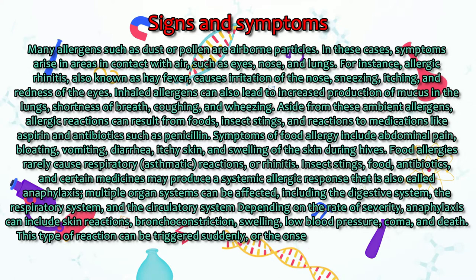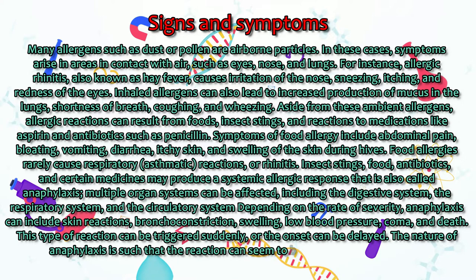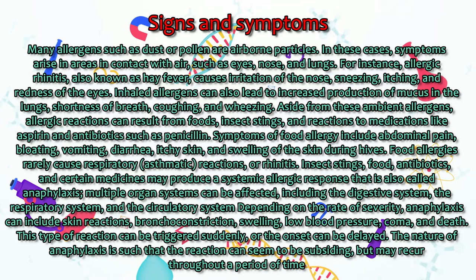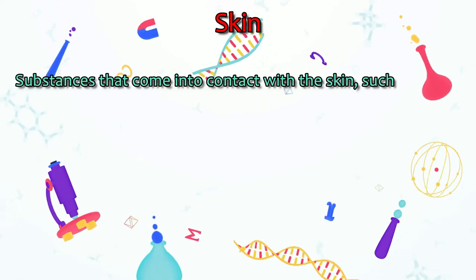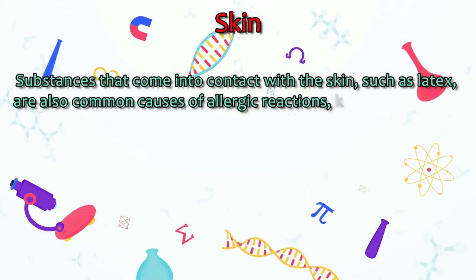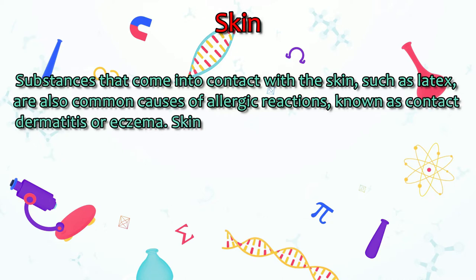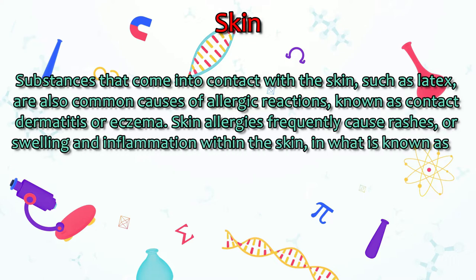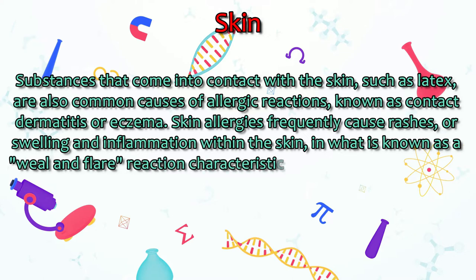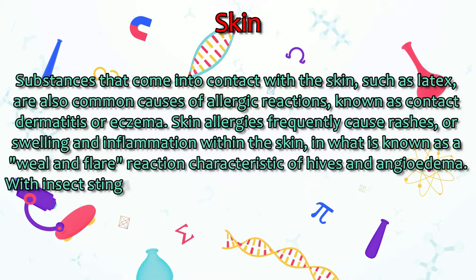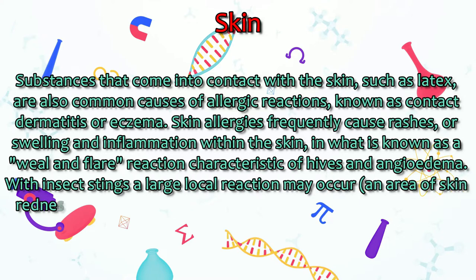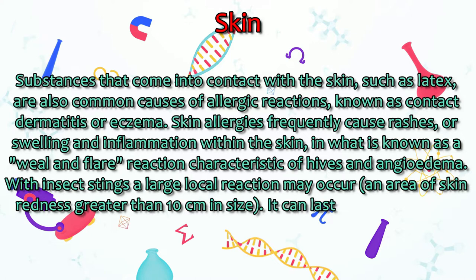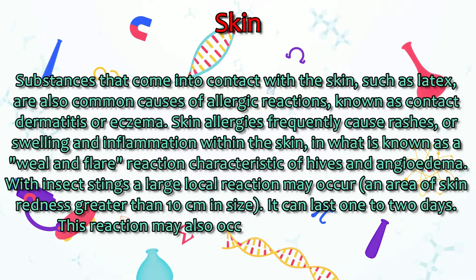This type of reaction can be triggered suddenly, or the onset can be delayed. The nature of anaphylaxis is such that the reaction can seem to be subsiding, but may recur throughout a period of time. Substances that come into contact with the skin, such as latex, are also common causes of allergic reactions, known as contact dermatitis or eczema. Skin allergies frequently cause rashes, or swelling and inflammation within the skin, in what is known as a wheal and flare reaction, characteristic of hives and angioedema. With insect stings, a large local reaction may occur — an area of skin redness greater than 10 centimeters in size — lasting one to two days. This reaction may also occur after immunotherapy.